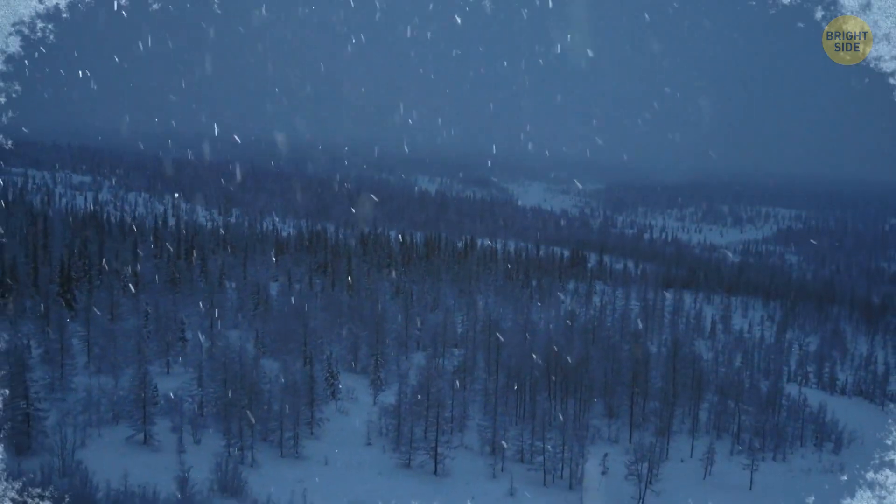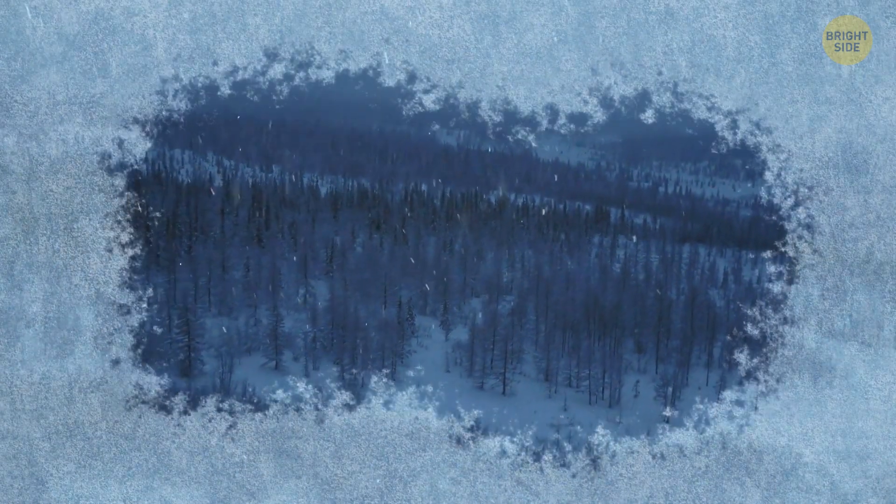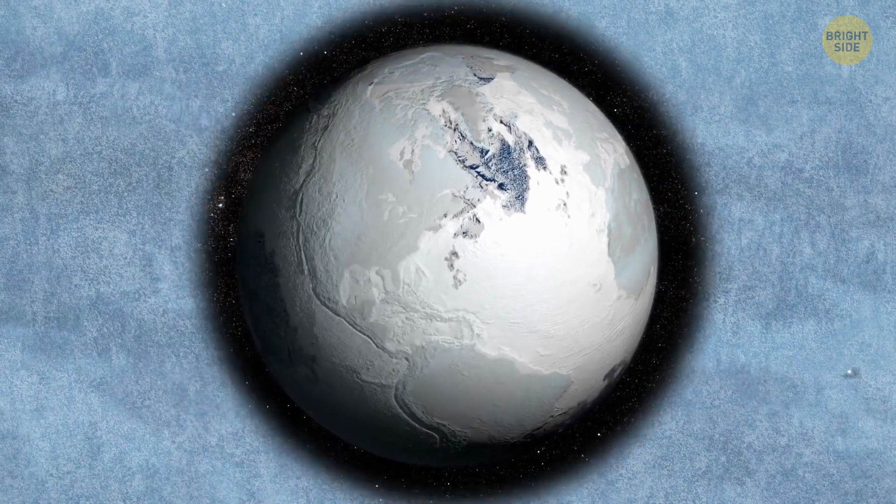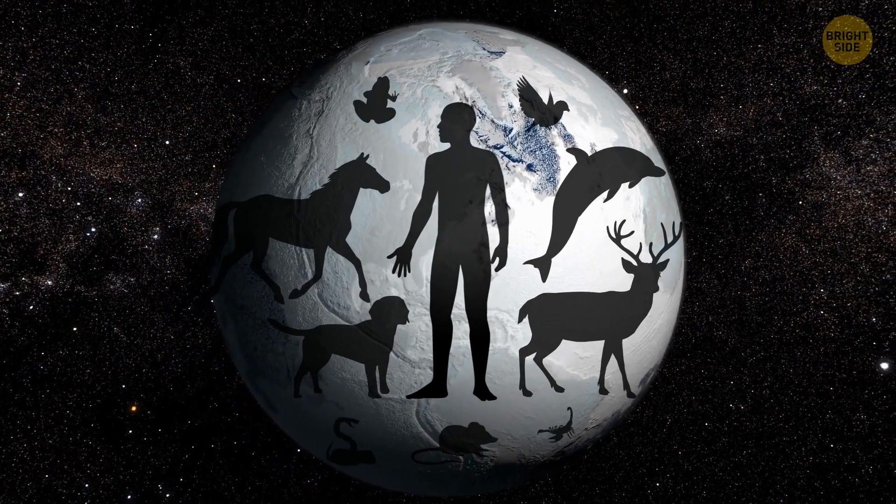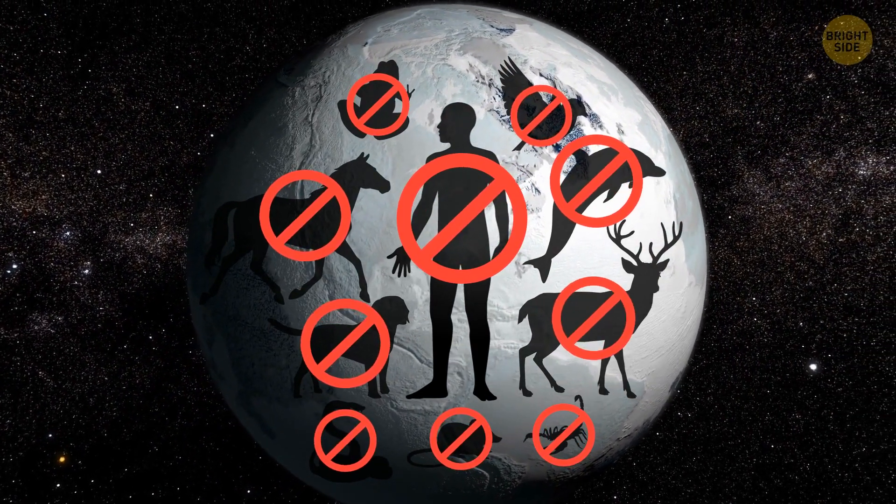The ash and dust in the air would cover the sun for several more months. During this time, the temperature on Earth would drop by several degrees. Even if they were hiding in deep shelters and bunkers, people, as well as all other living organisms on the planet, would be unlikely to survive this event.